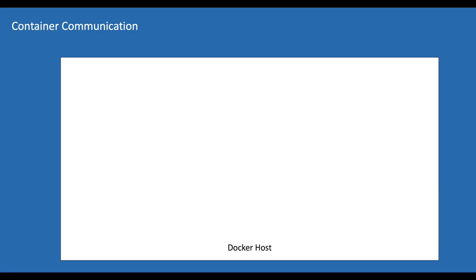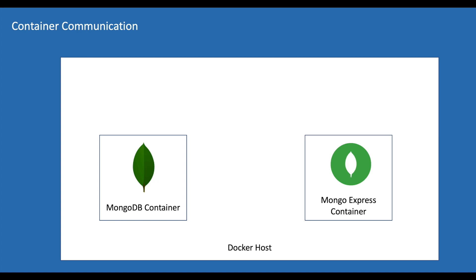At the moment we have two containers on our Docker host: one is MongoDB and the other one is Mongo Express. We also have Mongo Compass which is a desktop application — it's not containerized, meaning we didn't run it with Docker. We tried to access MongoDB with localhost using Compass and it worked, but the same thing with Mongo Express is not working. When you say localhost from inside a container it's not the same as localhost from your host — the container doesn't have any idea of what's going on outside unless we explicitly mention it. As we discussed, when a container is created it gets a unique IP address, so instead of giving localhost let's give the IP address of the container.